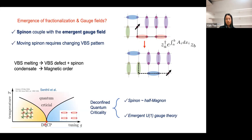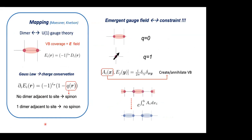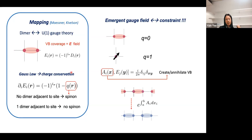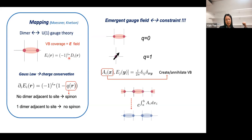[Question] Can you clarify the definition of the electric field — what are the indices i_r and d_i(r)? [Answer] d corresponds to the dimer coverage — whether we have a dimer or not. i is the sublattice factor on the bipartite lattice — either +1 or −1. The index i labels the edge (link), and it can be defined on any bipartite lattice where the sublattice factor is either 1 or 0.